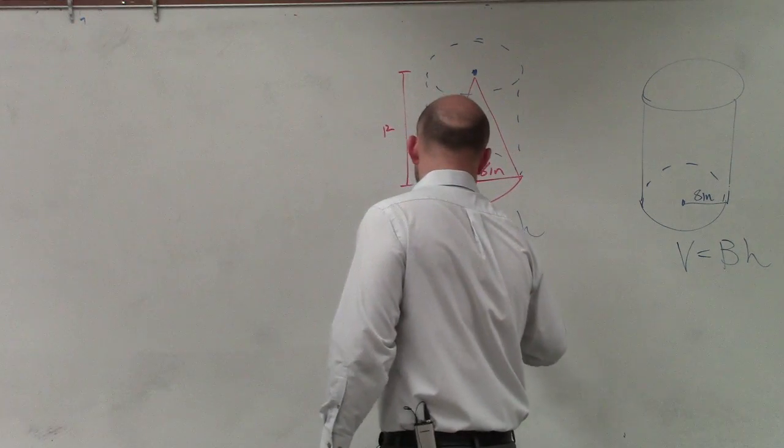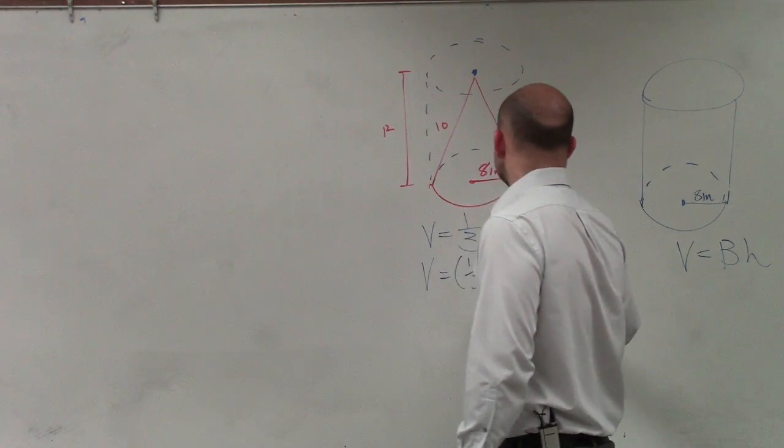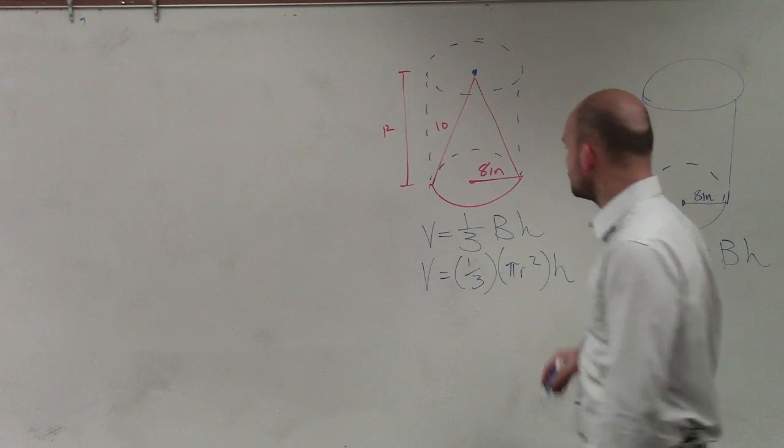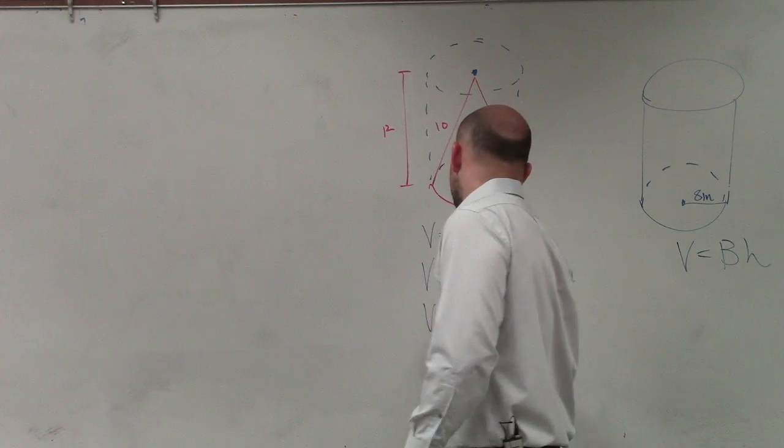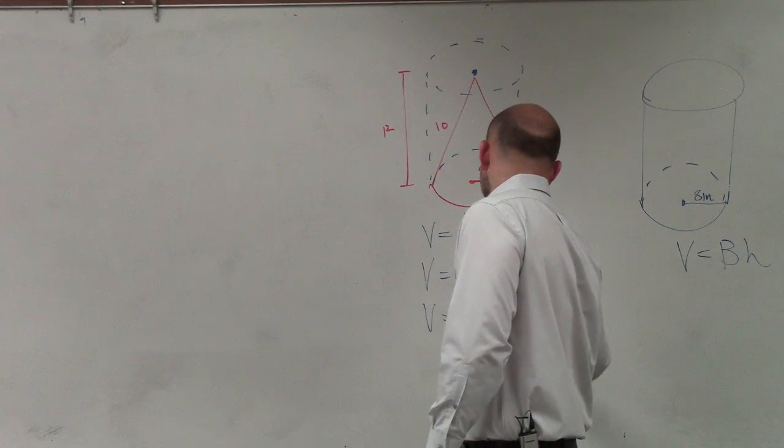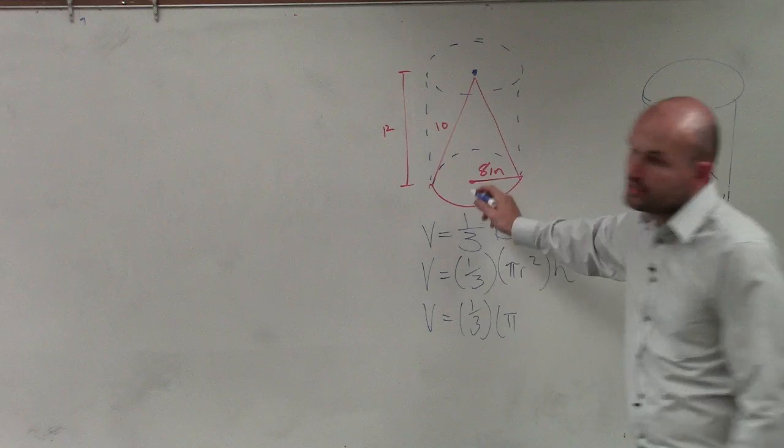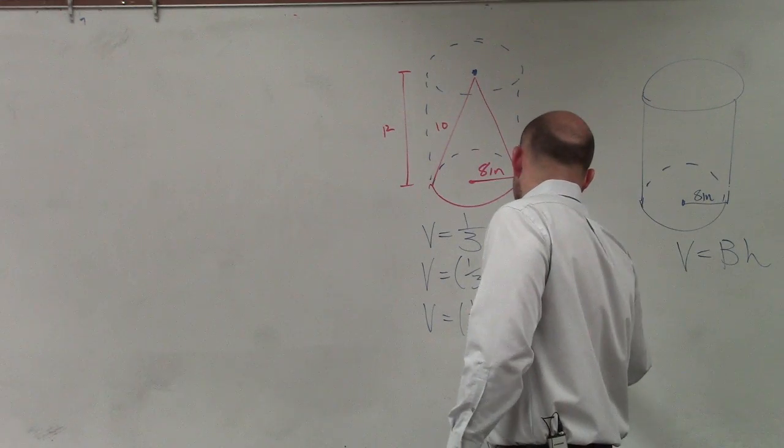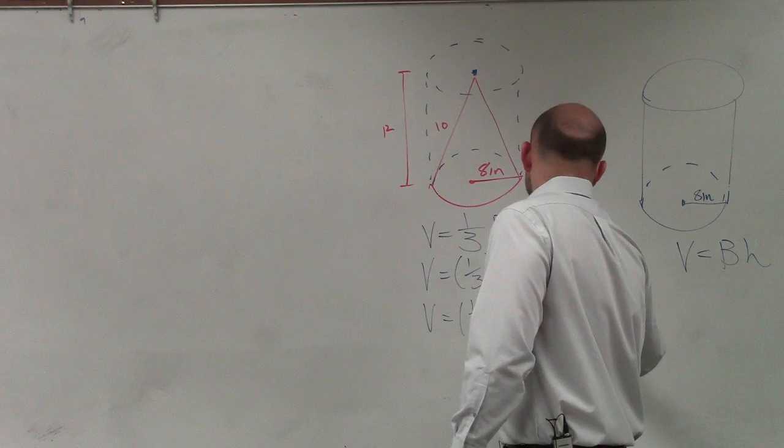So therefore, I have volume equals 1/3 times base, which is pi r squared times height. So now I just plug in my information. So I have 1/3 times pi r squared, or r is 8, 8 squared is 64, times height, which is 12.